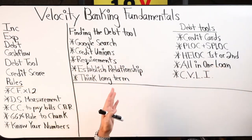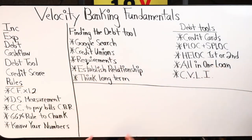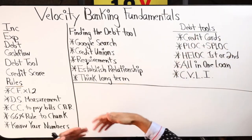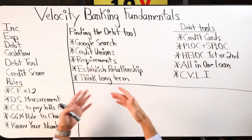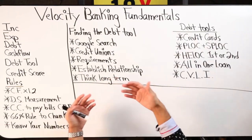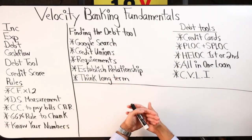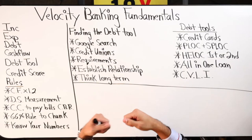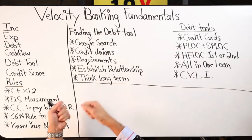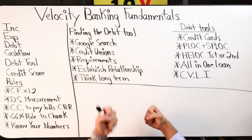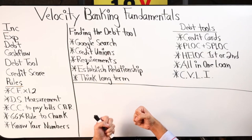What velocity banking does is simply accelerate the speed and direction at which you pay off debt. We are increasing speed in a particular direction — in most cases I deal with, that means paying off bad debt that is hindering cash flow and costing a lot of interest.